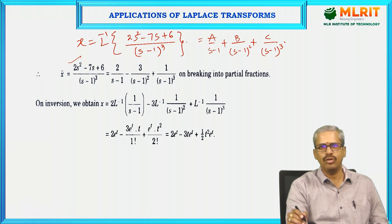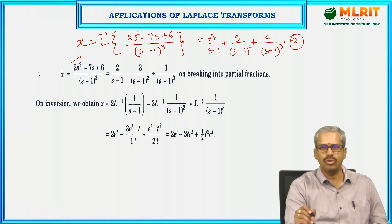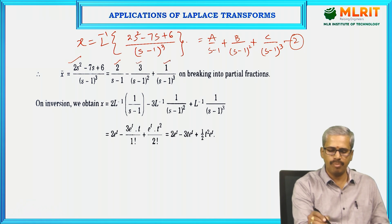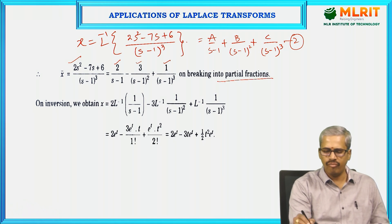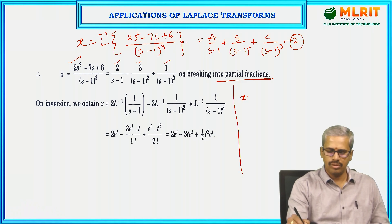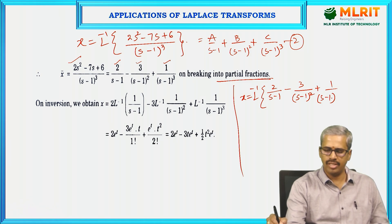Using partial fractions, we write: (2s² minus 7s + 6)/(s − 1)³ = A/(s − 1) + B/(s − 1)² + C/(s − 1)³. Solving for the constants gives A equals 2, B equals minus 3, and C equals plus 1. After substituting A, B, C, we have x equals L⁻¹{2/(s − 1) minus 3/(s − 1)² plus 1/(s − 1)³}.